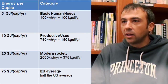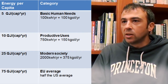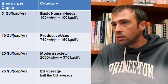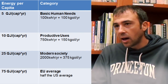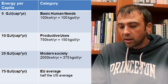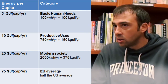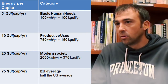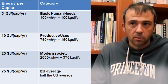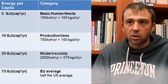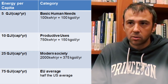The first category identifies people with basic human needs — everyone who consumes no more than 5 Gigajoules per year. This translates into basic human needs: some electricity and some oil for transportation or for cooking. Very basic human needs, as defined by the United Nations.